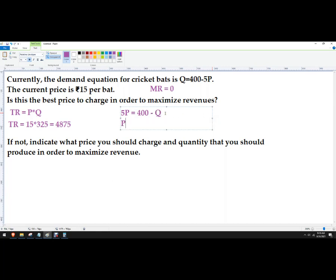And then P equals 400 divided by 5, which is 80, minus 1/5th, which is 0.2. You can write it as 1/5th if you want. So this gives us our price function, our inverse demand function rather.